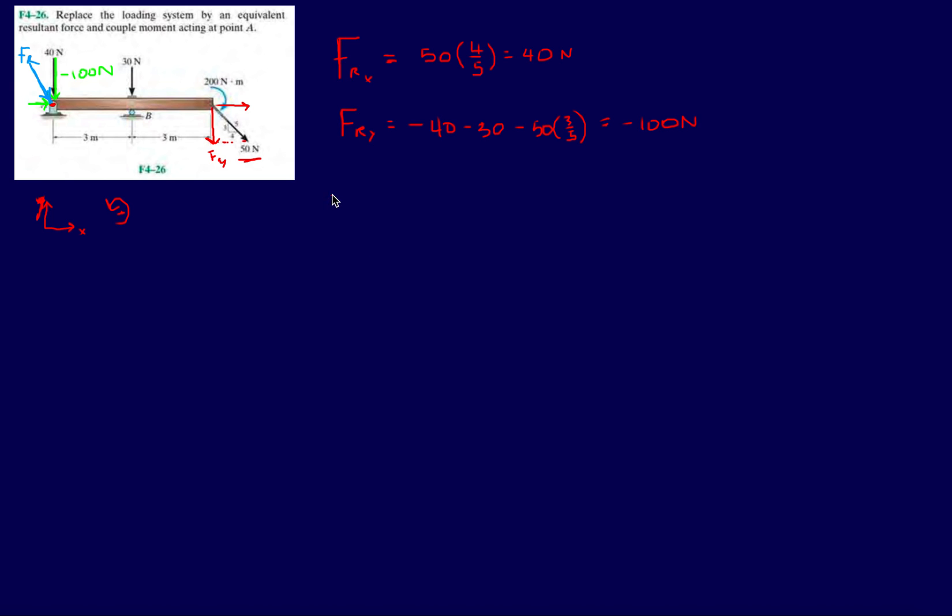So we're going to have to sum all the moments about A. First let's start with the moment that they give us already, which is 200 Newton-meters, and it's going clockwise so it's going to be minus 200. That's already an added moment. Then let's start with the forces. Does the 40 Newton force contribute any torque on A? The answer is no, because it's just pushing on A, so it's not trying to make it rotate about A.